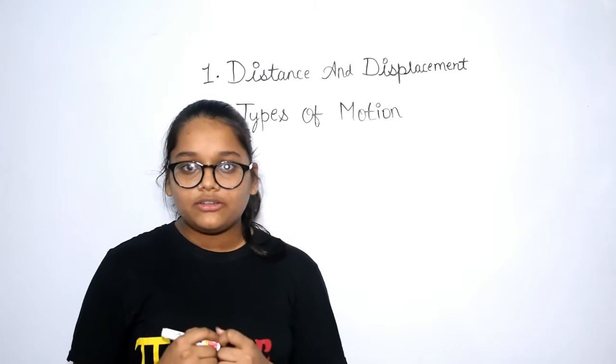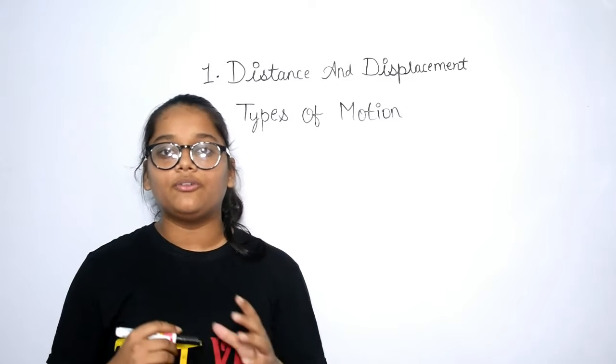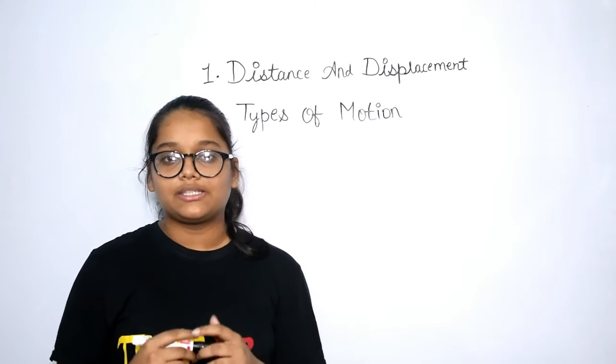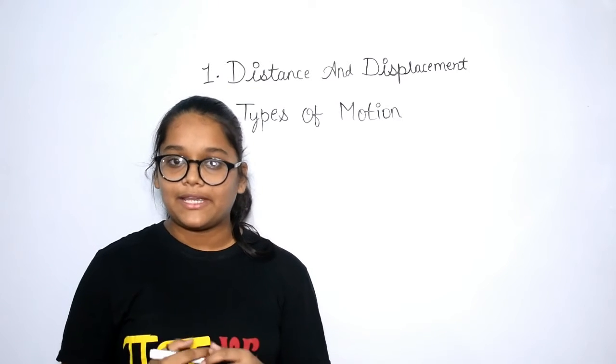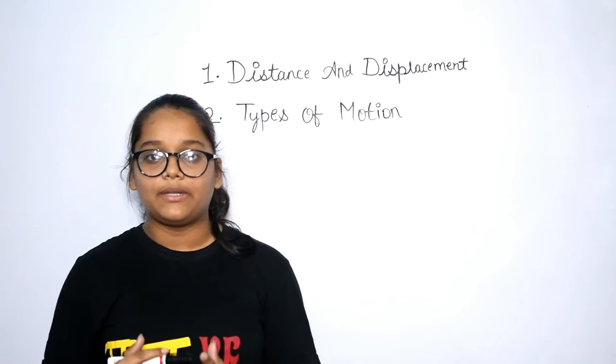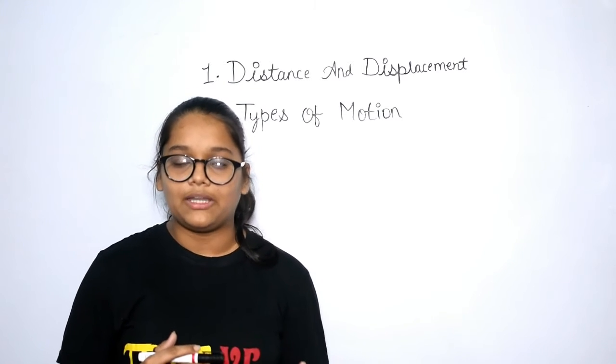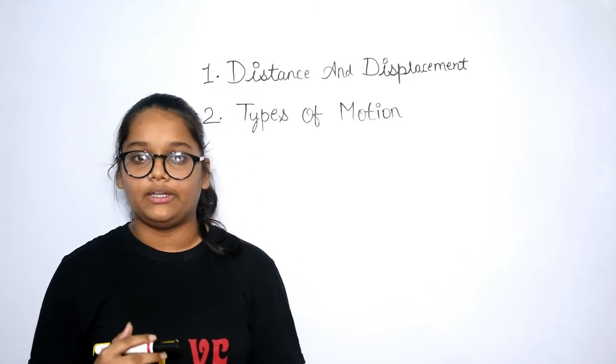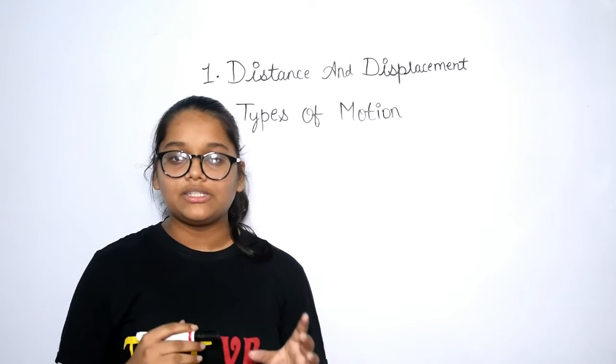The actual length of the path from initial point to final point is known as distance. And what is displacement? When body moves from one place to another place, the shortest distance between initial point and final point along with direction is known as displacement.